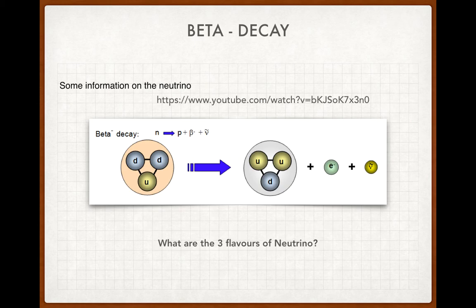Okay, there's a video here. I'll post that on Edmodo. Watch the video. It's only three minutes long. There's some good background information on it, and I'd ask you then just to write one of the three flavors of the neutrino. There are three types.